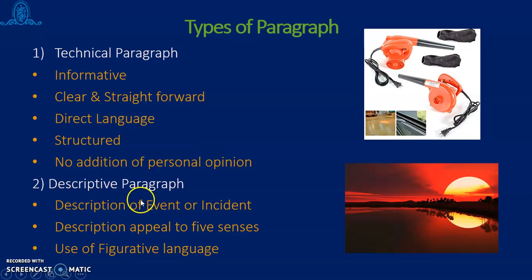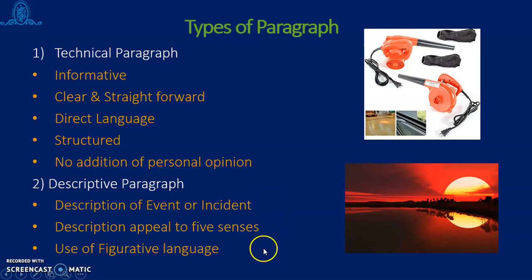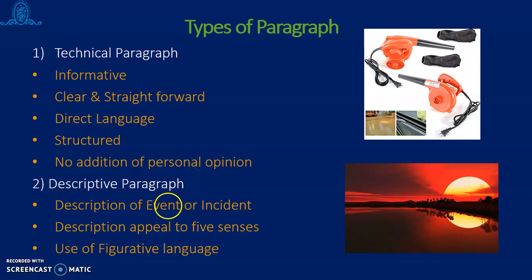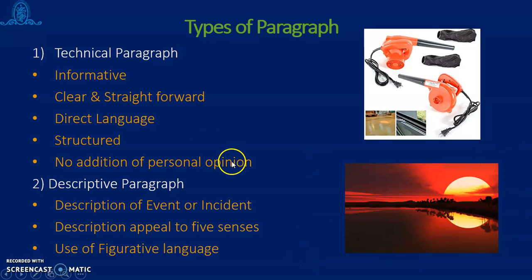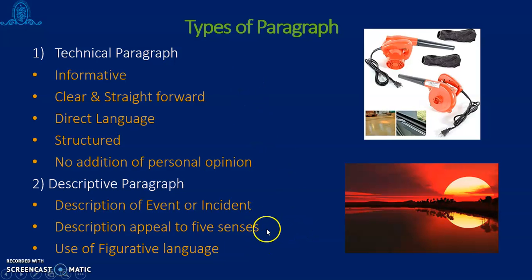The second type of paragraph is the descriptive paragraph. As you know, a descriptive paragraph requires your description of any event or any incident. This description must be appealing to all our five senses — it should keep all our senses alert and be a pleasing one. Also, the writer can use figurative language so that the paragraph can be well understood and well realized by the reader. So, if I have to write a paragraph on sunset or sunrise, I have to select the language accordingly. I cannot always be informative; my language cannot be straightforward. I can use figures of speech — different metaphors and similes — to describe the event or any kind of incident. That is the difference between technical paragraph and descriptive paragraph.